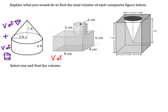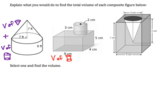For this figure, we have a cylinder and we have a rectangular prism. We just need to figure out the volume of each of those and add them together — the volume of the cylinder, the volume of the prism, and add them together.